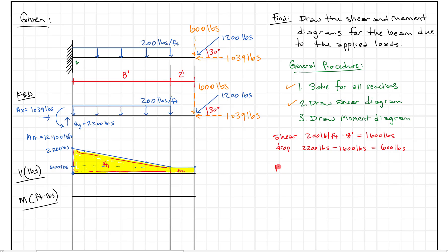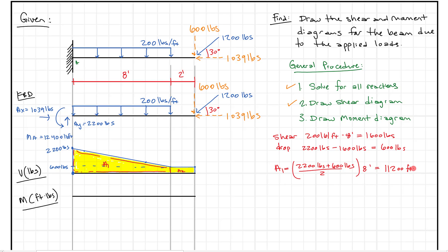To go to our moment diagram, we need to figure out areas because we're going to integrate from left to right. The two areas that pop out are: Area 1, the trapezoid under the uniform load region, and Area 2, the smaller rectangle at the end. Area 1 equals (2,200 + 600) divided by 2, times 8 feet, which gives 11,200 foot-pounds. Area 2 equals 600 pounds times 2 feet, which gives 1,200 foot-pounds.